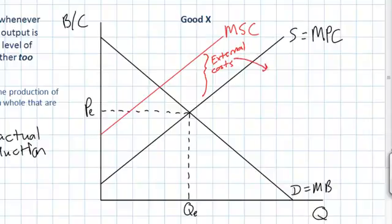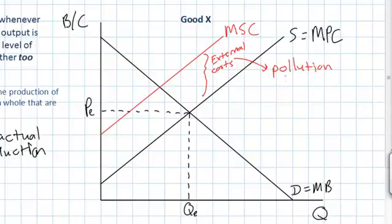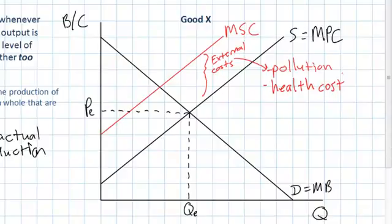What are some examples of the external costs that might arise from the production of Good X? Good X could represent anything that in the production process creates pollution. Pollution exists when a firm cheaply disposes of its waste in a way that harms the environment and possibly the health of others in society. External costs may also involve health costs — perhaps the health of workers in the industry whose health is jeopardized by the production. So external costs include pollution in the form of air or water pollution, as well as higher health costs for people employed in production. When there is a negative externality, the marginal social cost will always be above the marginal private cost.